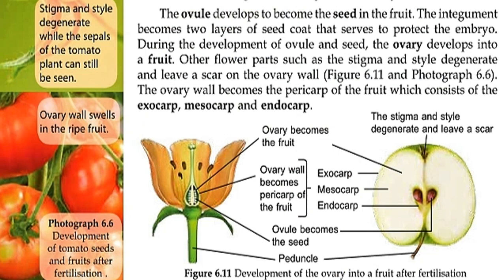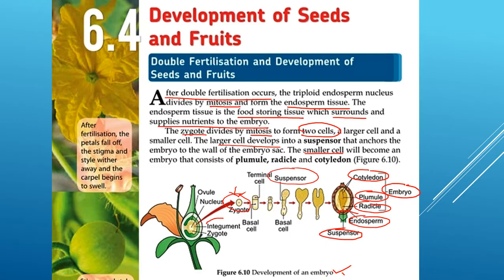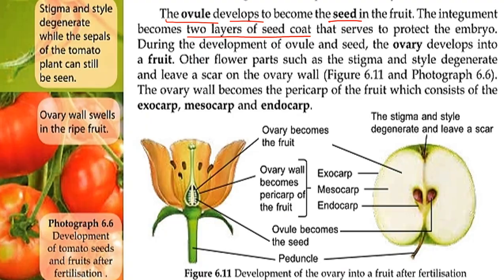The ovule will then develop into a seed inside the fruit — the ovule becomes the seed within the fruit. The integument becomes the two layers of the seed coat, which protects the embryo.